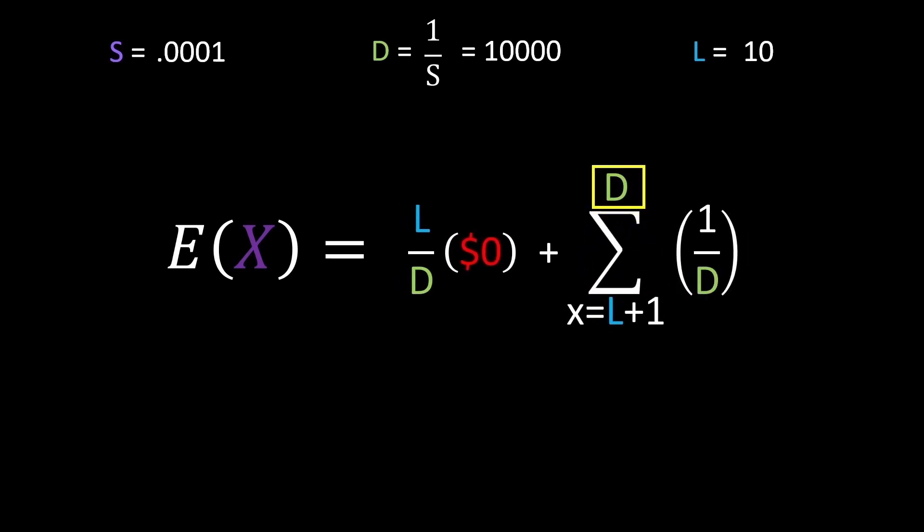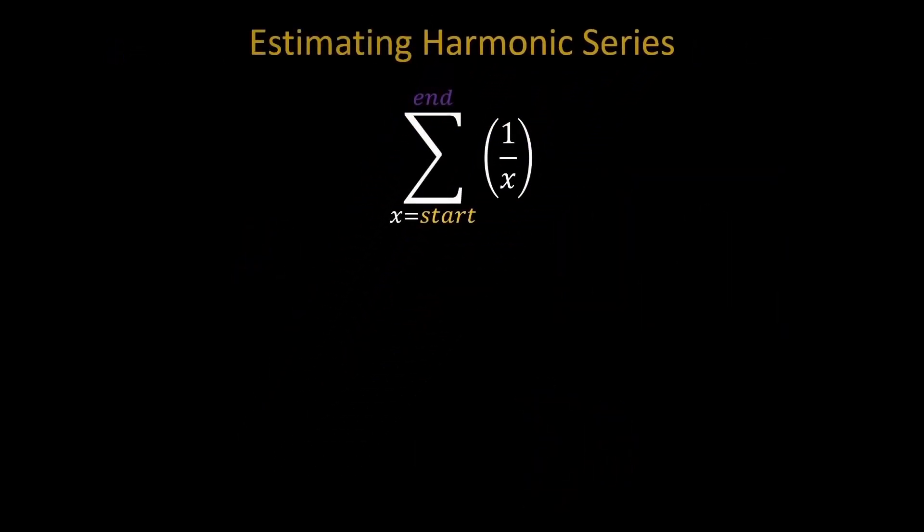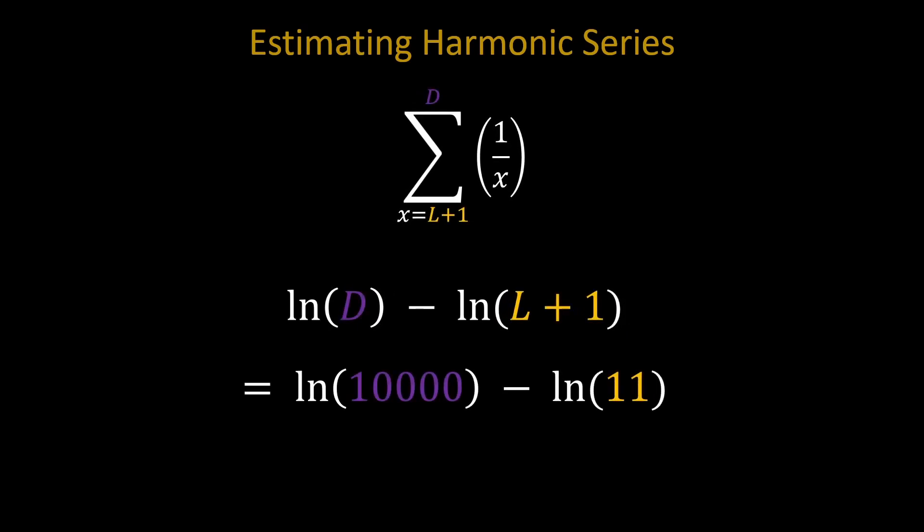If you've taken some calculus, this expression might look familiar because it's a section of something called the harmonic series. I'll go into the details of it in a later video, but what's cool about it is that mathematicians have approximated what different parts of it evaluate to. Their estimate for any section of the harmonic series is the natural log of the last number in your range minus the natural log of the first number in your range. There's also something called Euler's constant, but it cancels out in the subtraction. Plugging in our values, we get the natural log of 10,000 minus the natural log of 11, which equals about $6.81.